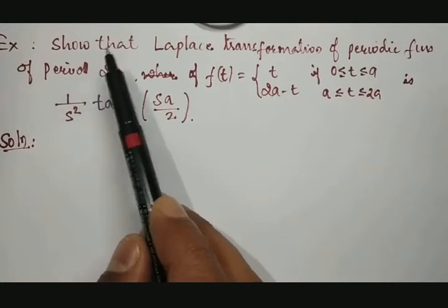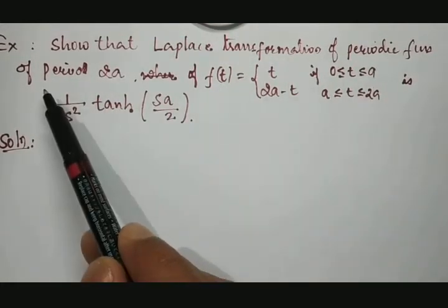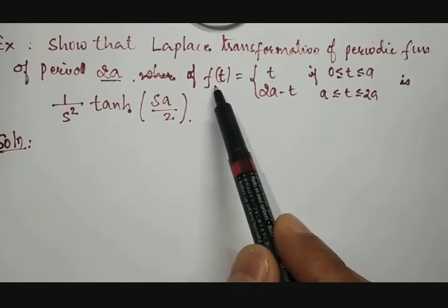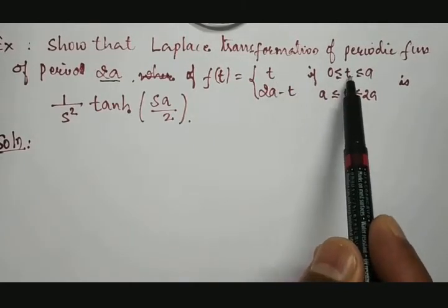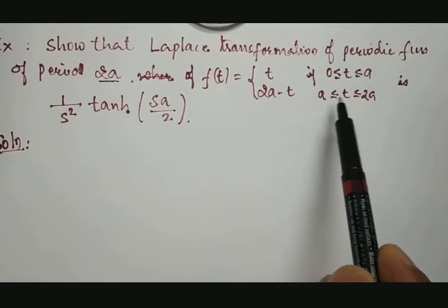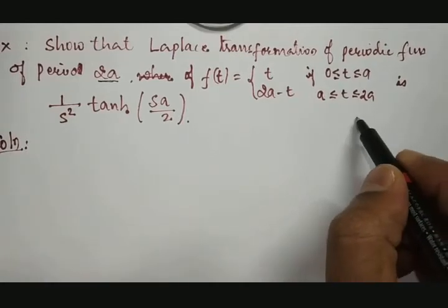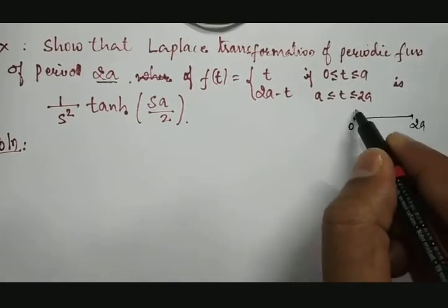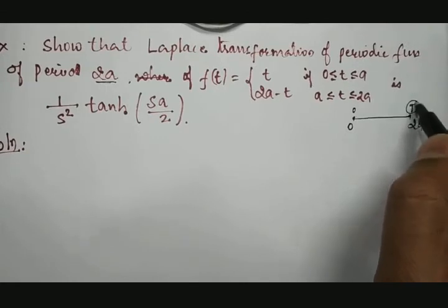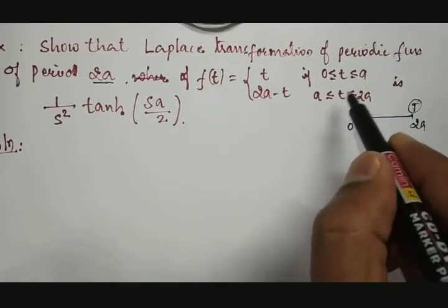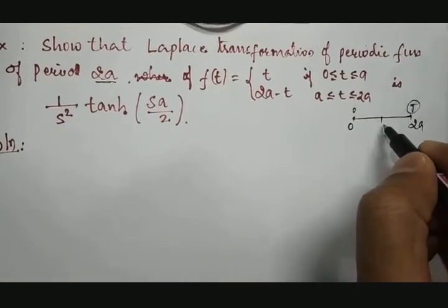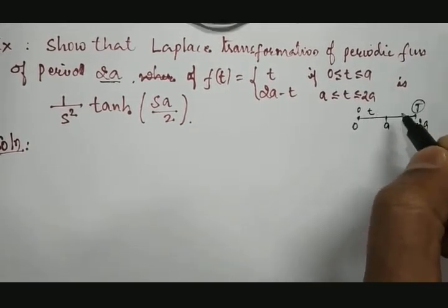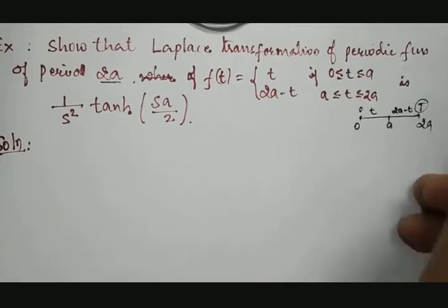The example says: show that the Laplace transformation of a periodic function of period 2a, where the given function f(t) equals t if t lies between 0 to a, and equals 2a minus t if t lies between a to 2a. There are two intervals: from 0 to a the functional value is t, and from a to 2a it is 2a minus t.